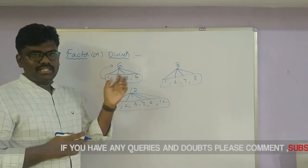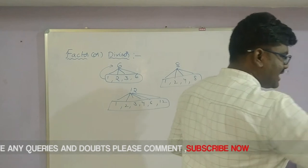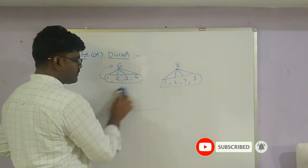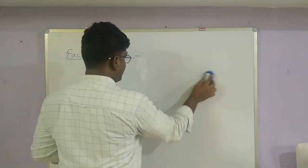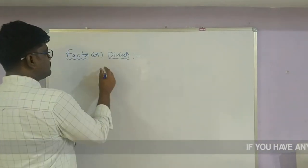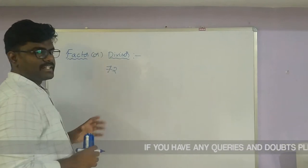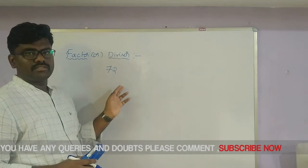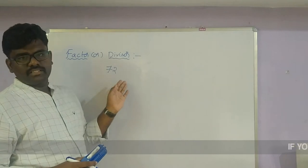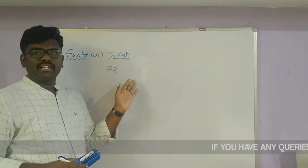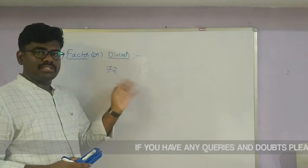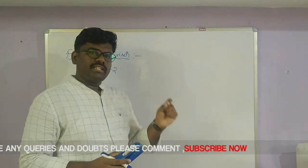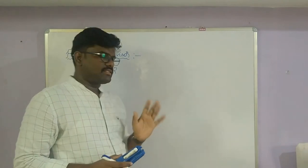When it is a small number we can find factors easily. But when they give any large number, for example 72, how many factors are there? We can check: is 1 divisible? Is 2 divisible? Is 3? Is 4? And so on — it will take a lot of time. So to find the number of factors we use prime factorization.